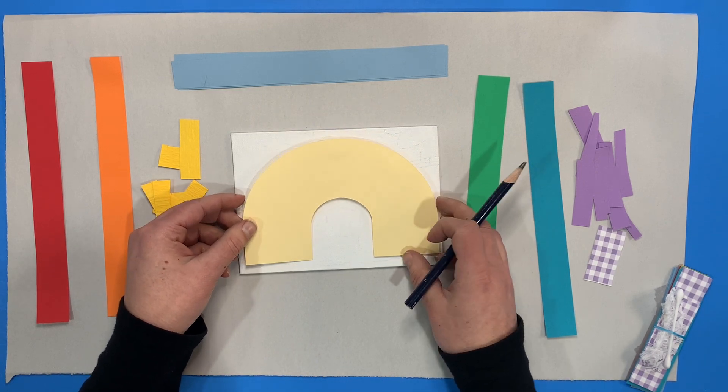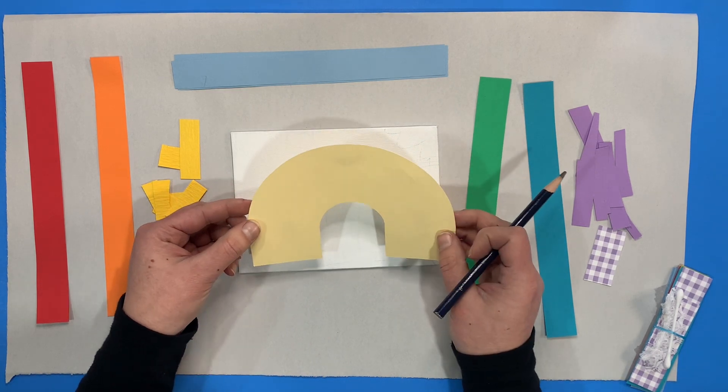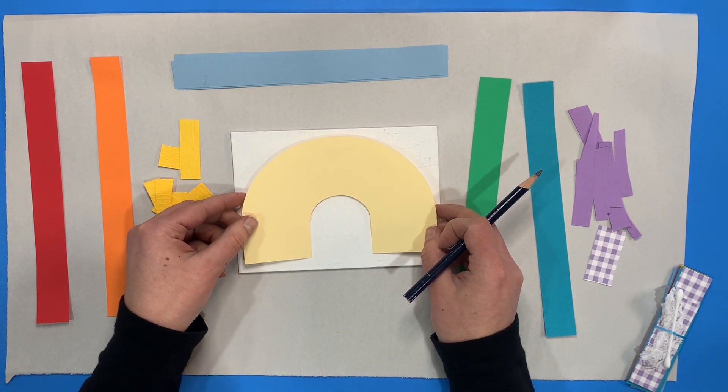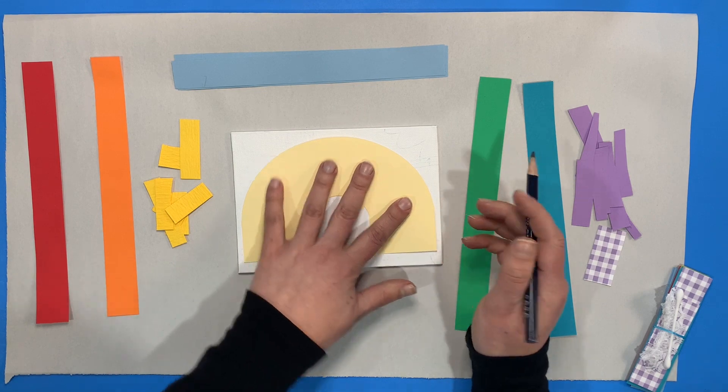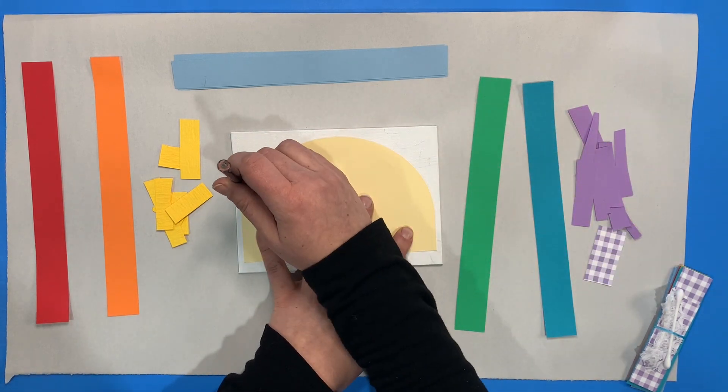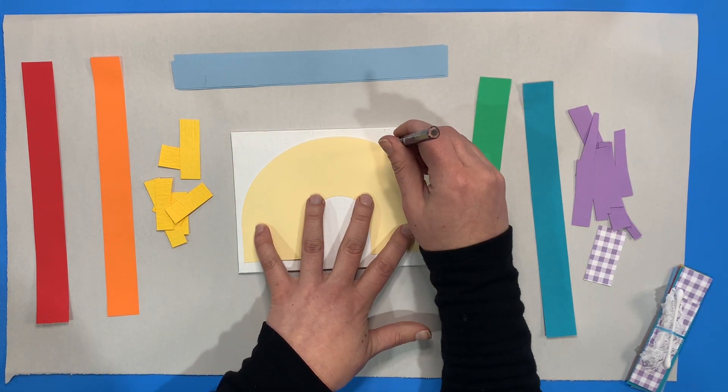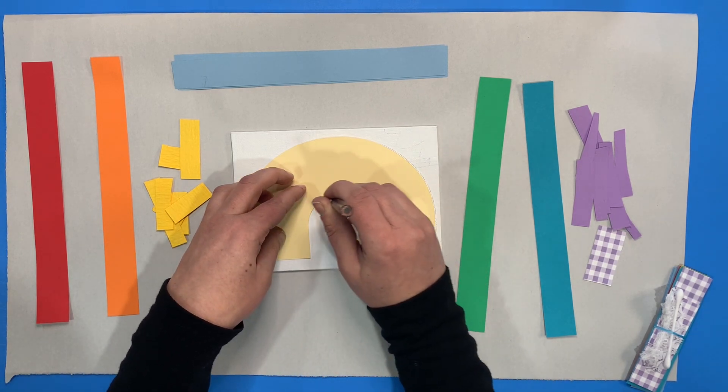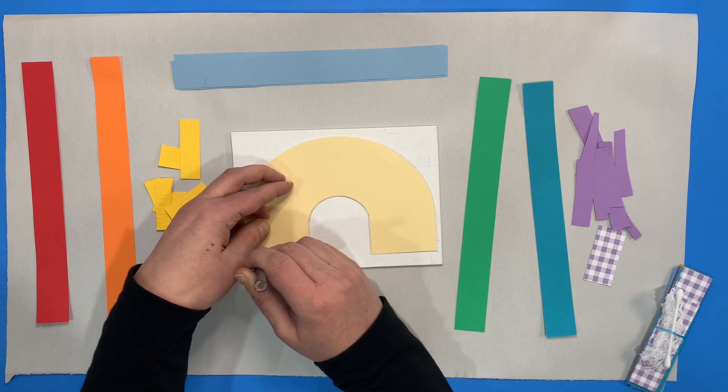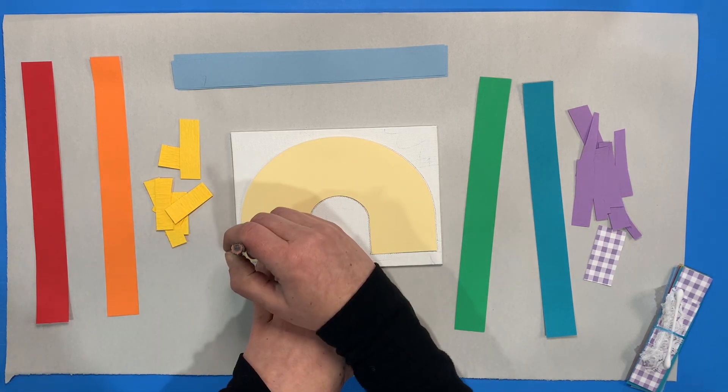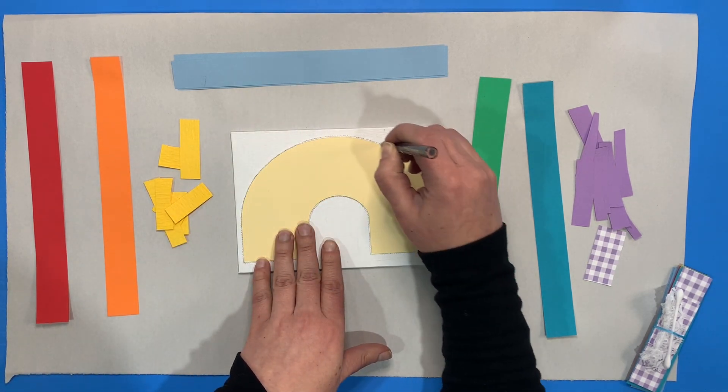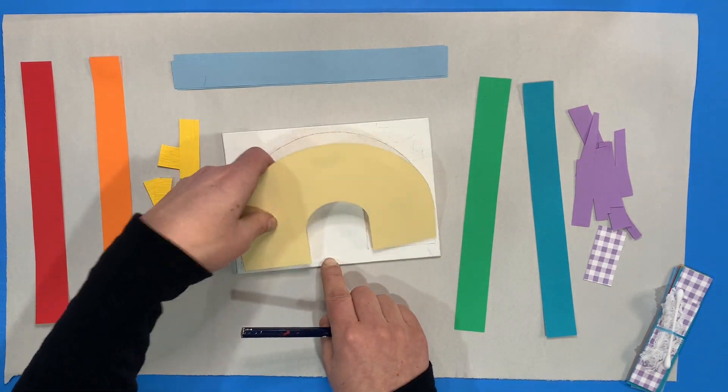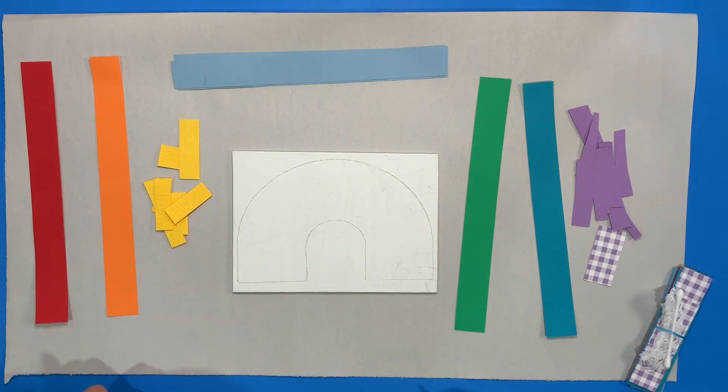When I lay this down in the middle, I'm going to hold it tight, or a grown-up could put some tape on the back of it so that it doesn't slide around. And you can hold it down tight or tape it. Use your pencil and hold it nice and straight, nice and up and down. And you're going to trace all the way around it so that you have a perfect rainbow shape instead of needing to erase over and over again. When you remove it, you have this awesome, ready-to-go rainbow.